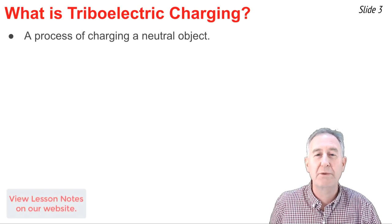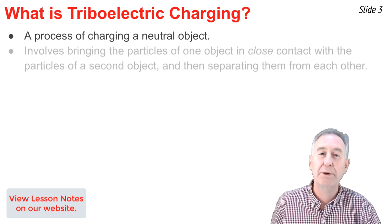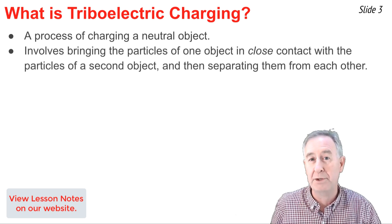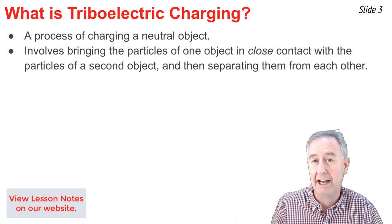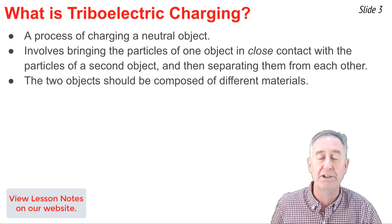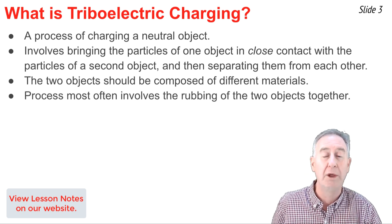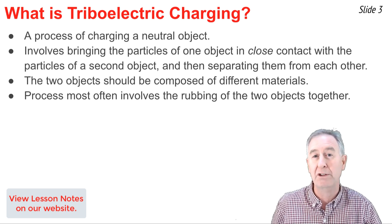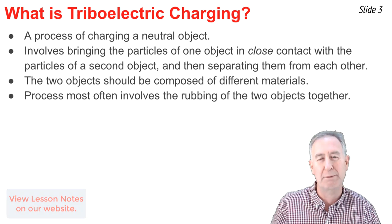Triboelectric charging is one of several processes that can be used to charge a neutral object. This particular process involves bringing the particles of one object in close contact with the particles of a second object. The two objects ideally would be composed of different materials, and most often the process is carried out by rubbing the two objects together so that the particles of one material and the particles of another material have maximum contact with one another.